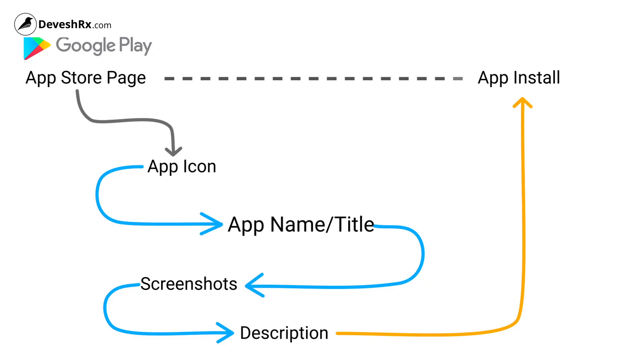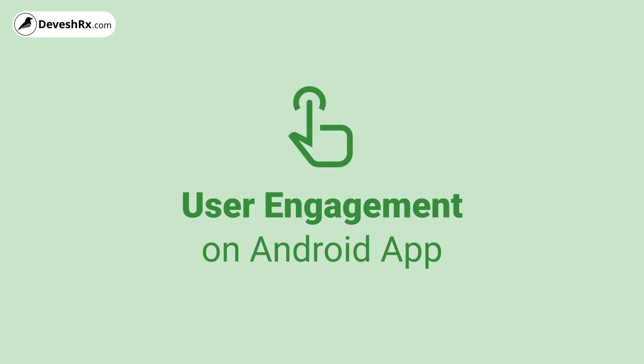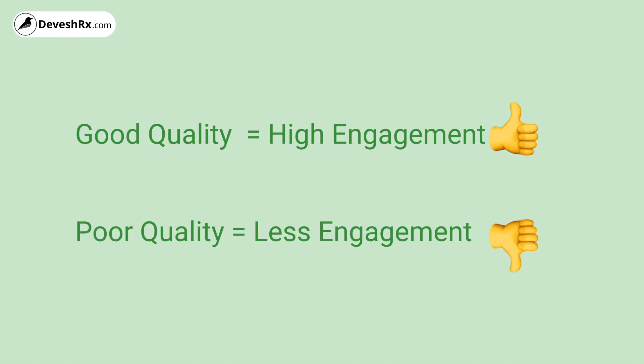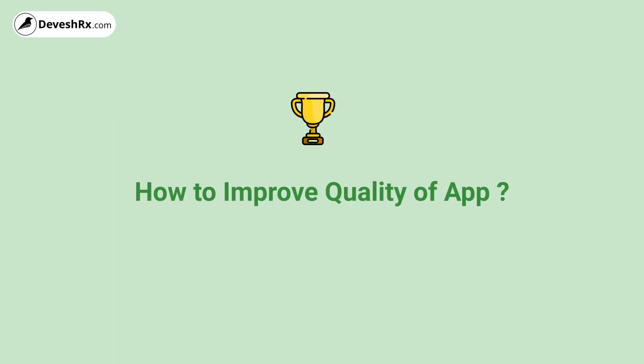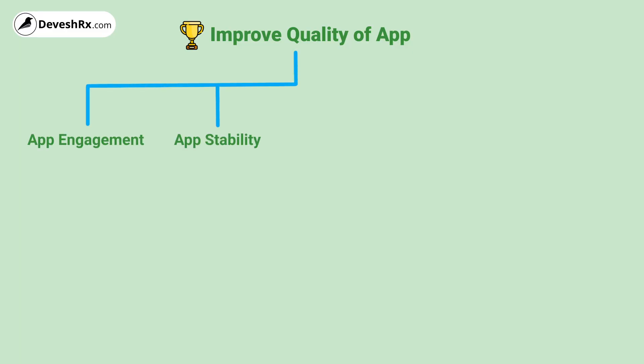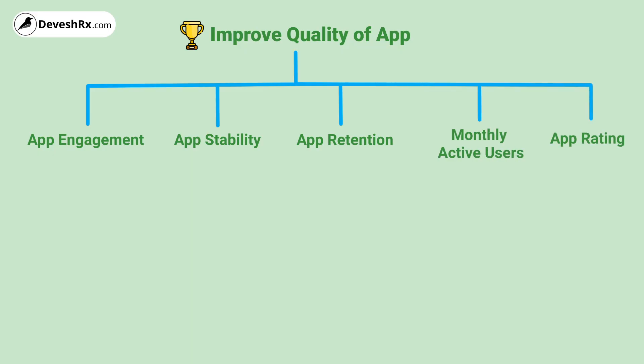To recap, the user attention journey on the Play Store starts with the app icon, then the app name, then screenshots, and ends with the description. After going through all these elements, the user decides whether to install or not. If they install, you need to focus on user engagement, because how users interact with your Android app plays a crucial role in app ranking — it signals the quality of your app. Good quality apps get more engagement; poor quality apps get less, and Google Play Store picks up on this.